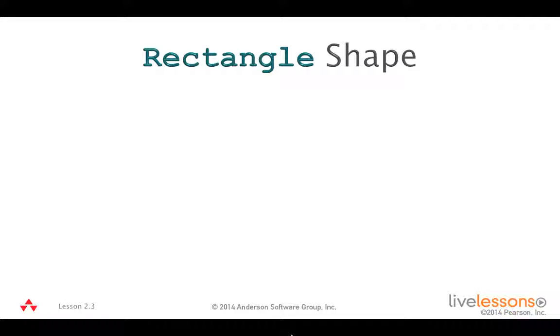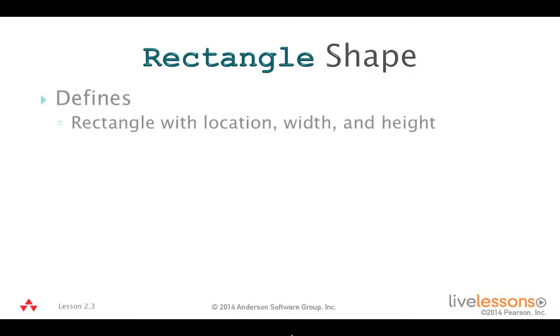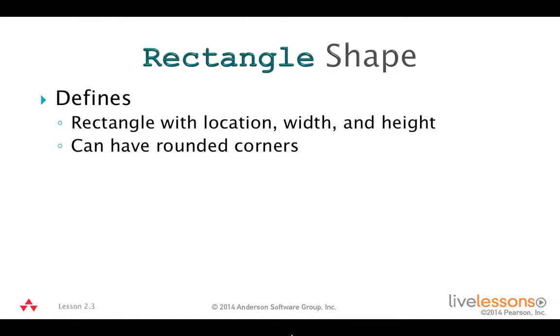The rectangle shape lets you draw a rectangle at a specific location with a width and a height. The default is square corners when the rectangle is drawn, but you can specify rounded corners if you want.